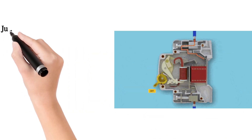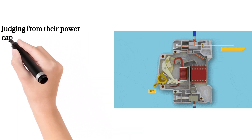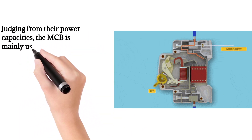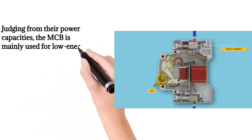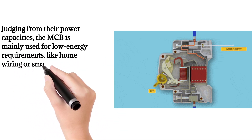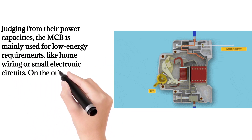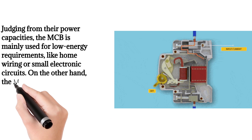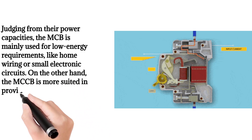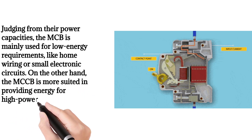Judging from their power capacities, the MCB is mainly used for low energy requirements, like home wiring or small electronic circuits. On the other hand, the MCCB is more suited in providing energy for high power equipment.